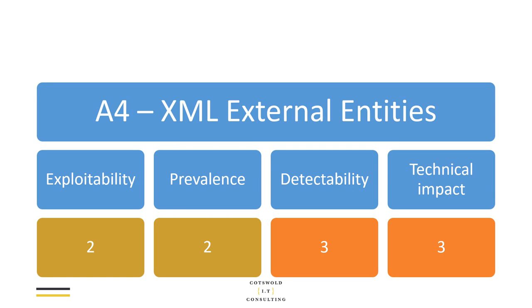According to the OWASP grid, this vulnerability is relatively easy to exploit and relatively common, and is generally quite easy to detect — you can usually find out quite easily if an application accepts malformed XML. The technical impact is pretty high because in the worst case you can expose private data or cause denial of service, making it pretty serious if this vulnerability exists in a web application.